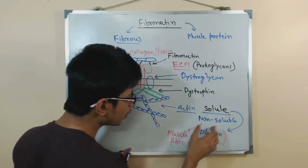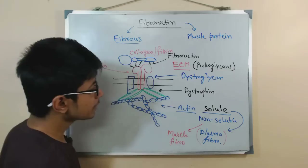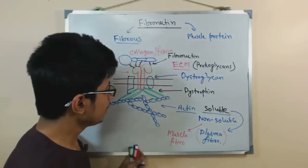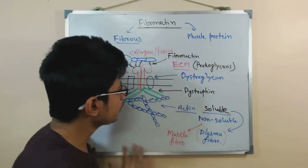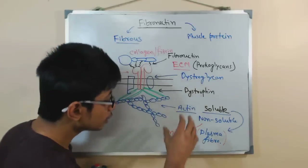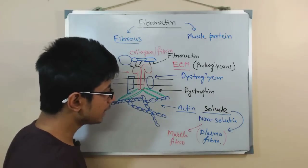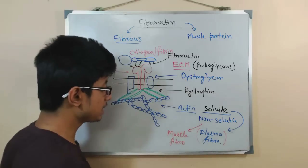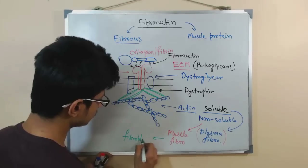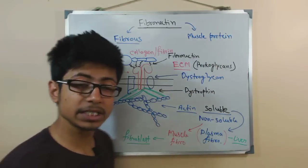The non-soluble form — muscle fibronectin — is fibrous in nature and insoluble in water. Regarding their production: the soluble form of fibronectin, plasma fibronectin, is produced by liver cells or hepatocytes. On the other hand, the non-soluble, fibrous fibronectin is produced mainly by fibroblast cells.